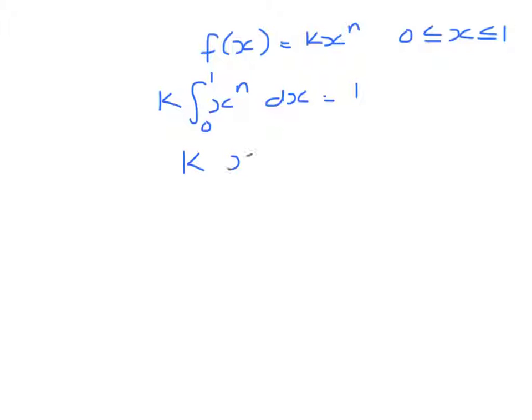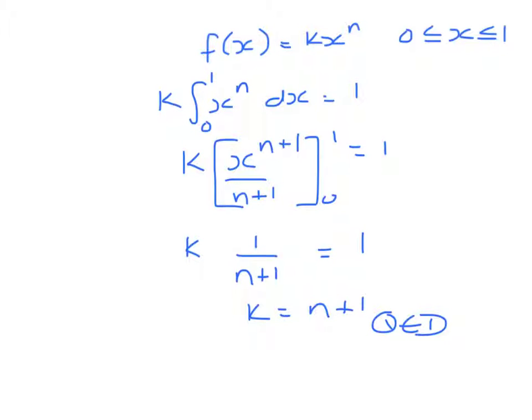So kx to the n plus 1 divided by n plus 1, between 0 and 1 must be 1. So substituting in, we get 1 over n plus 1, take away 0 equals 1, so k equals n plus 1, as asked for in the question.